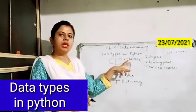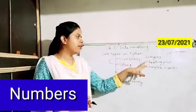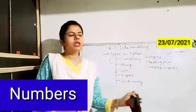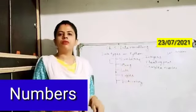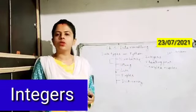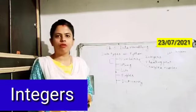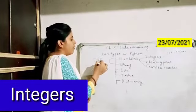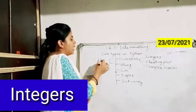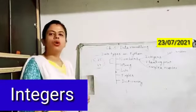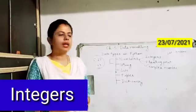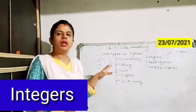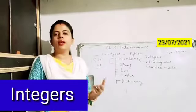The first one is numbers. Numbers are further divided into integer, floating point, and complex numbers. Integer numbers are those numbers which contain only whole numbers — there is no fractional form. For example, 5, 35, 64 — any number which does not have a fractional part can be called an integer number.